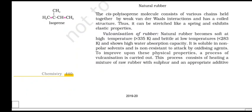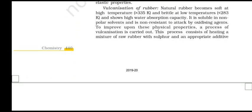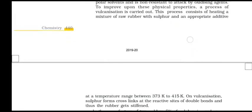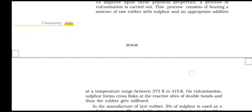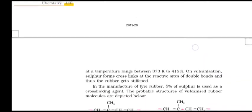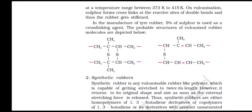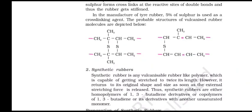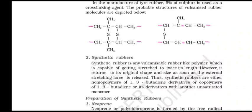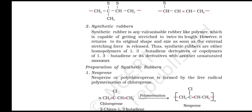Vulcanization of rubber: natural rubber becomes soft at high temperature and brittle at low temperature, and has higher water absorption capacity. It is soluble in non-polar solvents and is not resistant to attack by oxidizing agents. To improve upon these physical properties, a process of vulcanization is carried out. This process consists of heating a mixture of rubber with sulfur and appropriate additives at a temperature range between 373 K to 415 K. On vulcanization, sulfur forms cross-links at the reactive sites or double bonds and thus rubber gets stiffened. In the manufacture of tires, about 5% sulfur is used as a cross-linking agent.